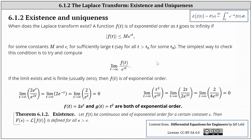Let's consider the functions f of t equals two e to the t and g of t equals t squared, and determine if they're both of exponential order. We'll use c equals two. For f of t, we have the limit as t approaches infinity of two e to the t divided by e to the two t. Because we're dividing with the same base, we subtract the exponents, giving us the limit of two e to the negative t, which equals zero. Therefore, f of t equals two e to the t is of exponential order.